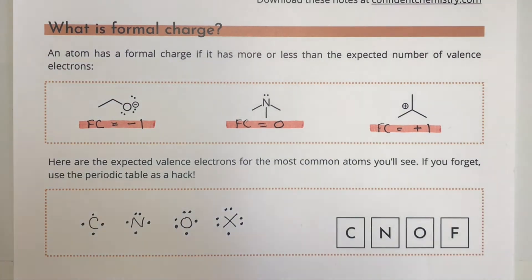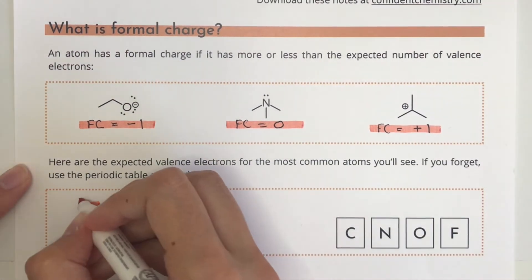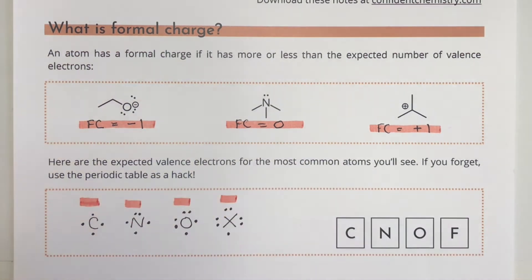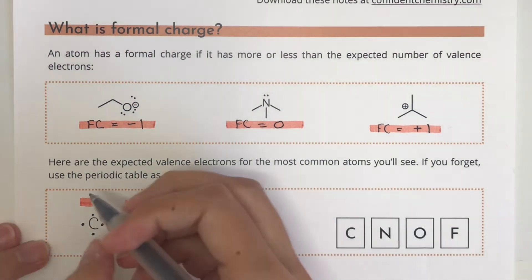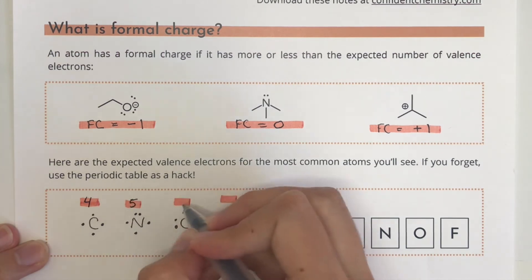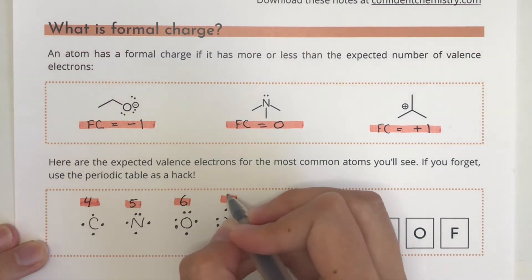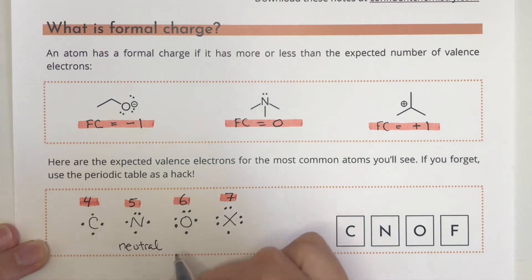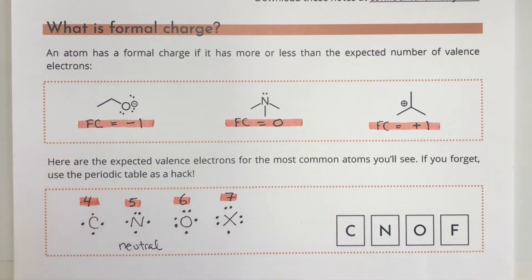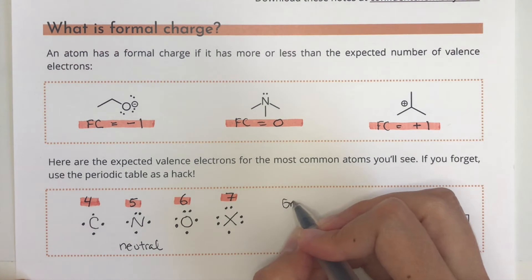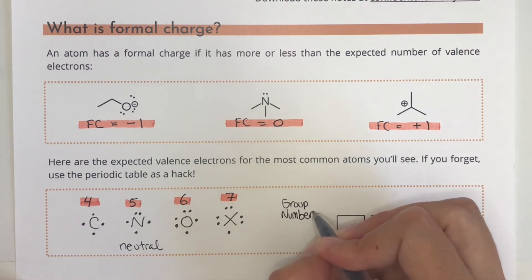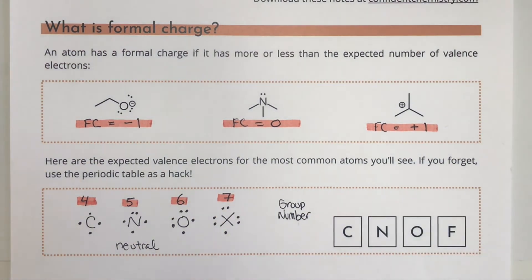I'm going to write those numbers up above the atoms again here just so that we can have a reference to remember. Neutral carbon atoms have four valence electrons, neutral nitrogen five, neutral oxygen six, and neutral halogens seven. These are the numbers we're going to be comparing to when we calculate a formal charge. If you forget these numbers, just check out your periodic table for reference.